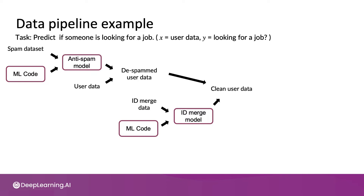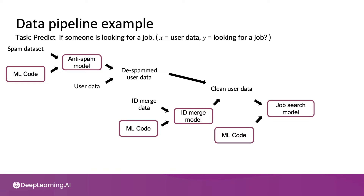Then finally, based on the clean user data — hopefully some of it labeled with whether someone is looking for a job — you would have another machine learning model trained on it to give you a model to predict if a given user is looking for a job or not. This is then used to make predictions on other users, or maybe across your whole database of users. This level of complexity in a data pipeline is not atypical in large commercial systems, and data pipelines or data cascades that are even far more complicated than this are common.